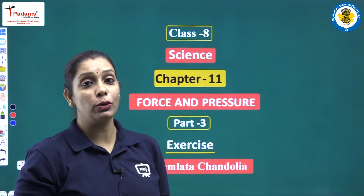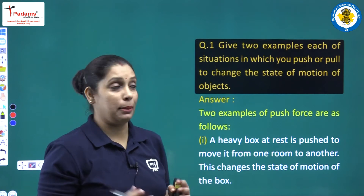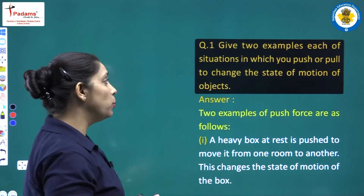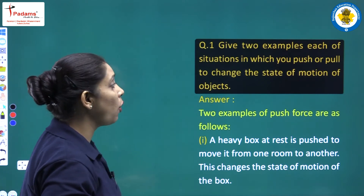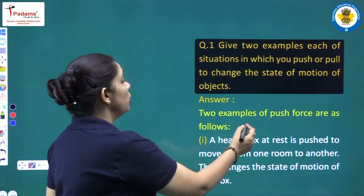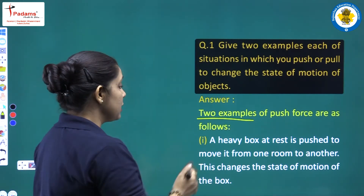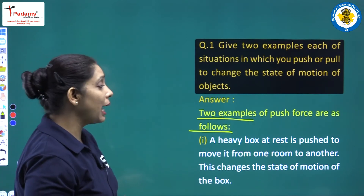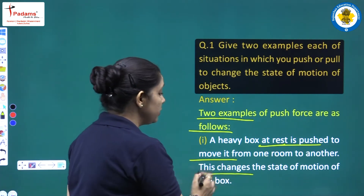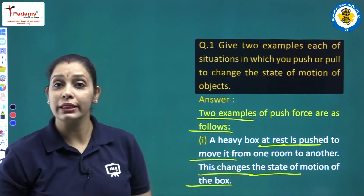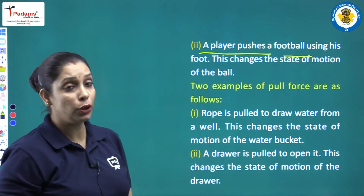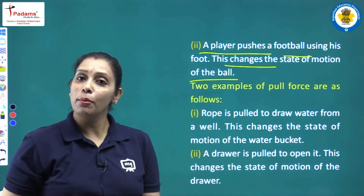Let's begin with Question 1. Give two examples each of situations in which you push or pull to change the state of motion of objects. For push force: the first example is a heavy box at rest is pushed to move it from one room to another — this changes the state of motion of the box. The second example is a player pushes a football using his foot — this changes the state of motion of the ball.